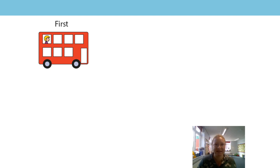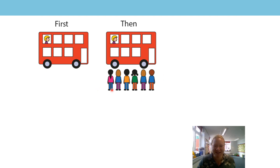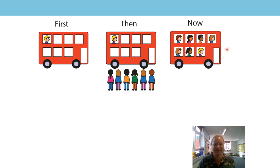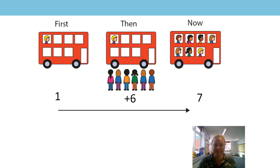Our addends before were six add one, so what do you think they might be this time? There's a bit of a clue on the screen there. Our first, we have one child on the bus. Can you think what's coming? Then — I bet you were right — six children wanted to get on. Now we have seven. We have the same sum. We started with one first, we had one child, and six more came. Now we have seven. So our addends have been swapped round, but our sum remains the same.